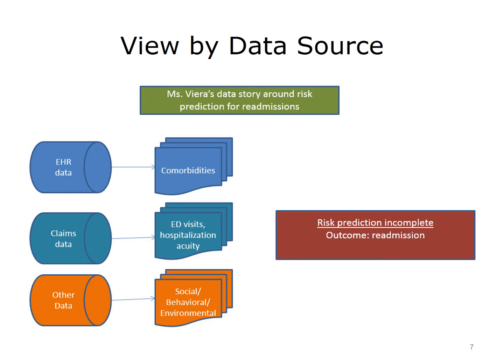Information about ED visits, the acuity of the hospitalization, and final diagnoses may only be available through claims, since the hospital may be on a different system. Finally, other data — usually not stored in either the EHR or the claims data — may be helpful, such as social, behavioral, and environmental data. Environmental, in this case, means information about where people live. The availability of healthy food may be low in certain urban settings. The lack of integration of this data leads to poor prediction in healthcare settings, and Ms. Vieira may be readmitted because the system did not adapt.